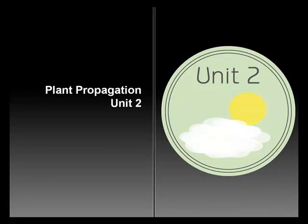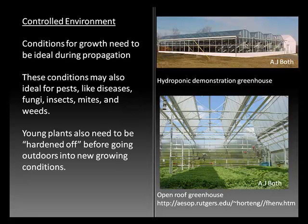Jeff Weiss, back with Part 2 of Unit 2, Plant Growth Environment. We're going to spend a couple of slides talking about greenhouses and other structures for plant propagation. The idea of all of these is to create conditions needed to be ideal during propagation — light, temperature, water, humidity, etc. — need to be controlled in order to promote optimal plant growth.